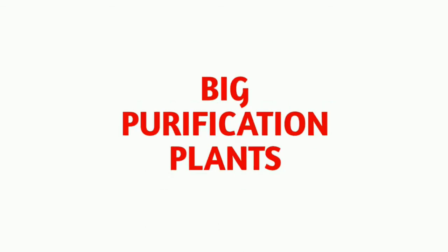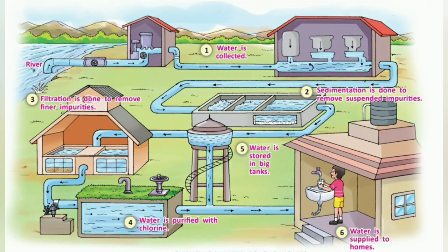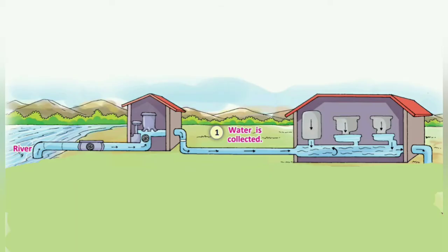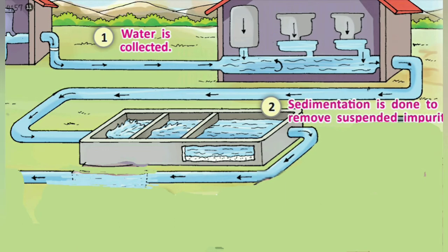Therefore, we need to purify water before drinking. In cities and towns, water from lakes or rivers is purified in big purification plants and then supplied to homes. The water is purified by sedimentation, filtration, and chlorination. As you can see in this picture, water is first collected from the river, and then sedimentation is done to remove suspended impurities.